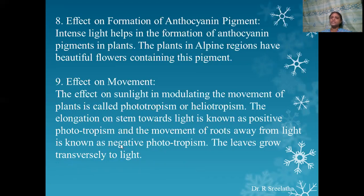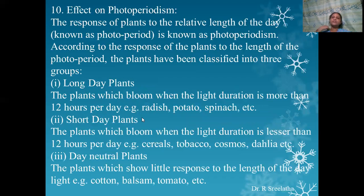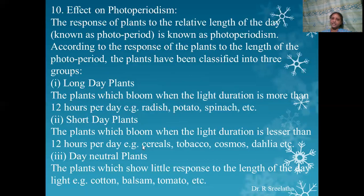Effect on photoperiodism: the response of plants to the relative length of the day, known as the photoperiod, is called photoperiodism. Based on their response, plants are classified into three groups. Long day plants bloom when the light duration is more than 12 hours per day — examples include radish, potatoes, and spinach. Short day plants bloom when the light duration is less than 12 hours per day — examples include cereals, tobacco, cosmos, and dahlia. Day neutral plants show little response to the length of daylight — examples include cotton, balsam, and tomato.